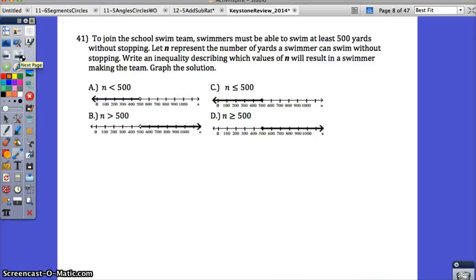41, to join the school's swim team, swimmers must be able to swim at least 500 yards without stopping. Let N represent the number of yards a swimmer can swim without stopping. Write an inequality to describe which values of N will result in a swimmer making the team. So to make the team they must be able to swim at least 500 yards and N is going to be the number of yards. What does at least mean? Think about that symbol. If you went to Kennywood and it said you have to be at least 4 foot tall to ride a ride, or if you wanted to go into the movies and they said you have to have at least $8 to get in. What does at least mean? Well it means that you could have more than that and you could have that exact amount but you can't have less than that.